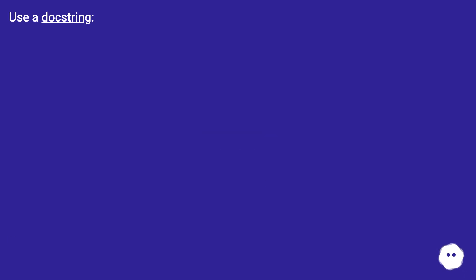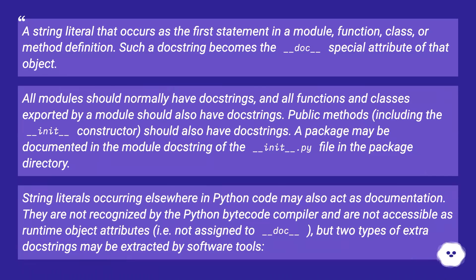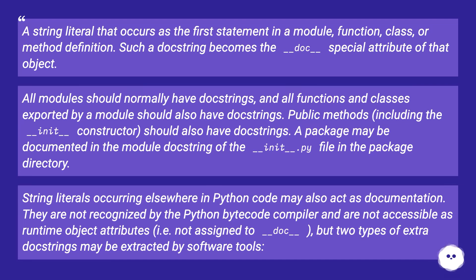Use a doc string — a string literal that occurs as the first statement in a module, function, class, or method definition. Such a doc string becomes the __doc__ special attribute of that object. All modules should normally have doc strings, and all functions and classes exported by a module should also have doc strings. Public methods, including the __init__ constructor, should also have doc strings.